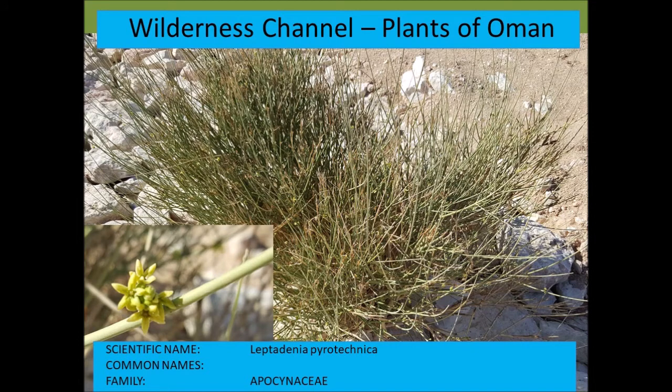Leptadenia pyrotechnica — this bush is typical of many species in the Apocynaceae: upright branches, very many twig-like branches, and no leaves. Pyrotechnica refers to pyrotechnics — fireworks — because of the appearance of the flowers on the stems, looking like explosions in the sky.